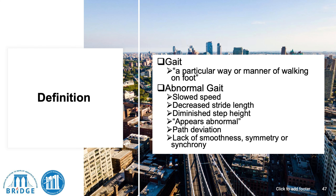What is gait? Gait is simply the manner in which an individual walks — a particular way of walking on foot. Abnormal gait is characterized by a change in speed such that walking speed is slowed, and there's a decreased stride length. Abnormal gait is also characterized by a deviation from the path of walking, lack of smoothness, or asymmetry.